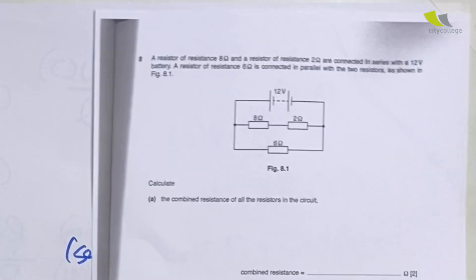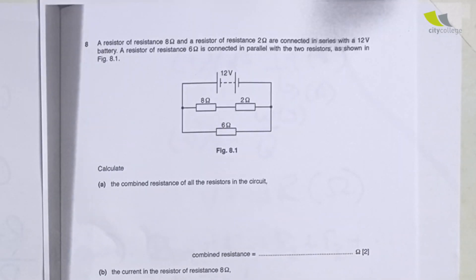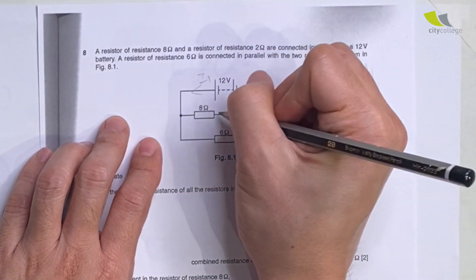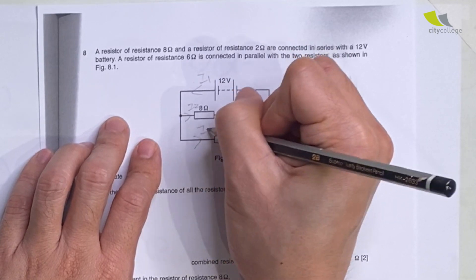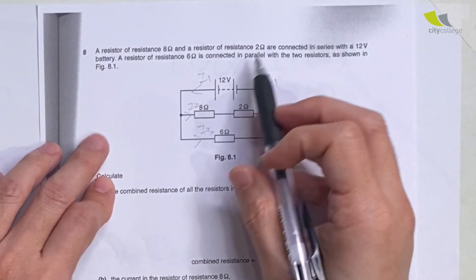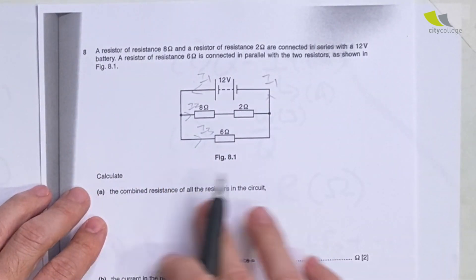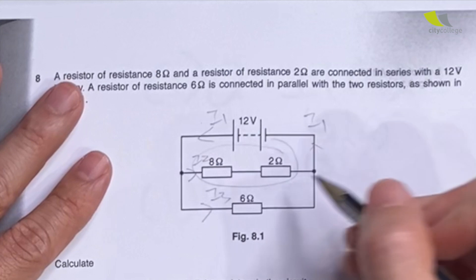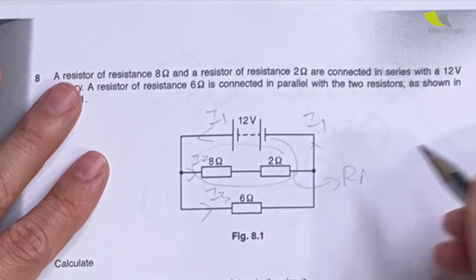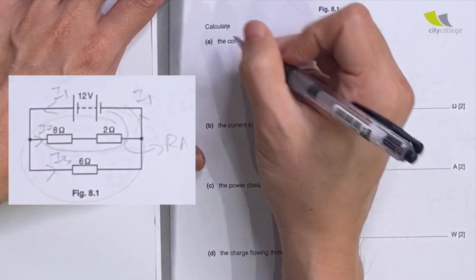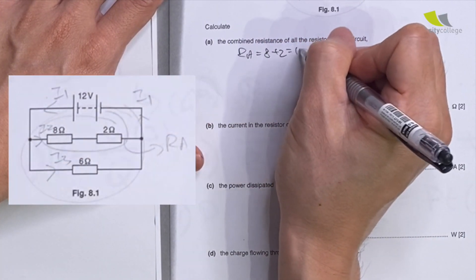Let's look at the 2016 paper. I have two resistors in series on one branch. Again, I write out my currents: I1 splits into I2 and I3, then comes back to I1. The supply is 12 volts. For the combined resistance of all resistors, treat the series pair as one group first: Ra = 8 + 2 = 10 ohms.